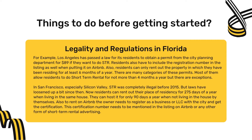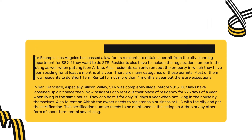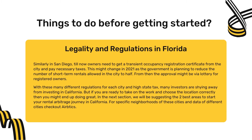To rent on Airbnb in San Francisco, the owner needs to register as a business or LLC with the city and get certification, which must be mentioned in any short-term rental listing. Similarly in San Diego, owners need to get a transient occupancy registration certificate and pay necessary taxes. This may change as the government plans to reduce short-term rentals allowed in the city by half, with approval possibly via lottery. With these varied regulations and high state taxes, many investors are shying away from California.